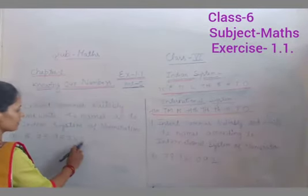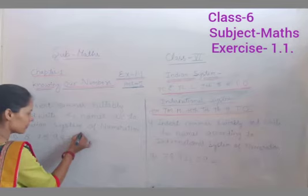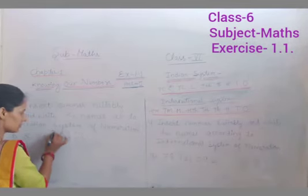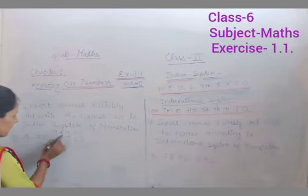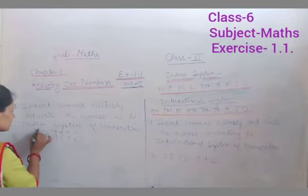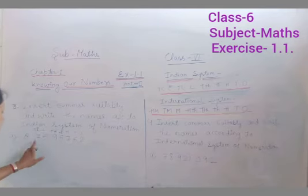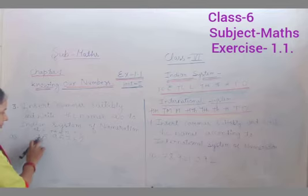Sabse pehle commas insert karna hai. Commas kaise insert karna hai? One, ten, hundred, thousand, ten thousand, lakh, ten lakh. That means this number is 8 crore 75 lakh, 95,762.